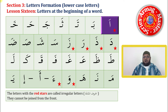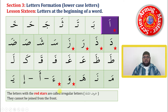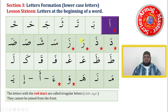We have some letters with a red star. The ruling for those is — at the bottom here it says — the letters with the red stars are called irregular letters. That means they cannot be joined from the front. Arabic goes from right to left, so the left-hand side of the letter would be the front. These letters can never ever be joined from the front.